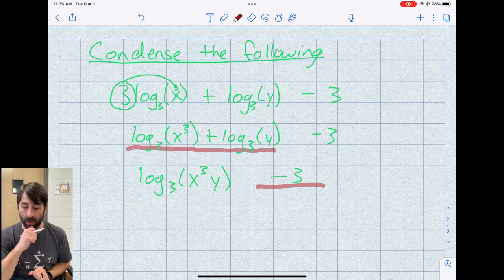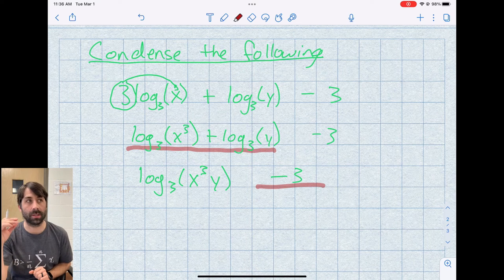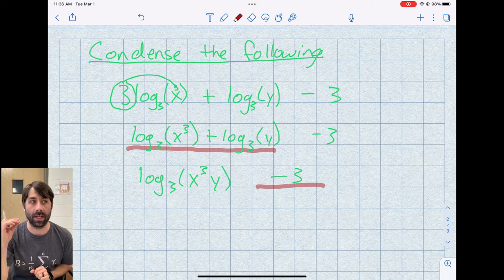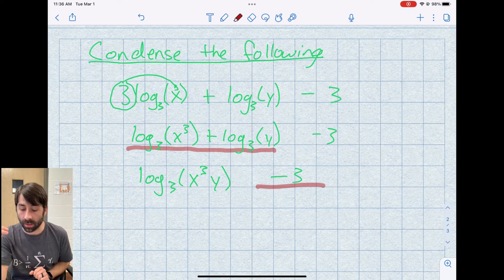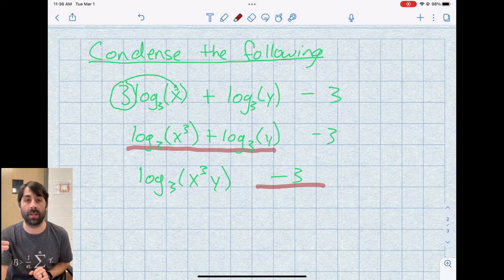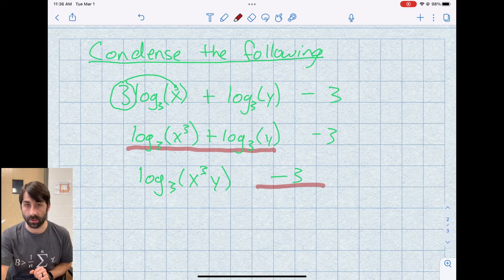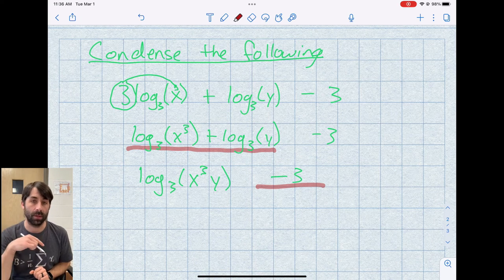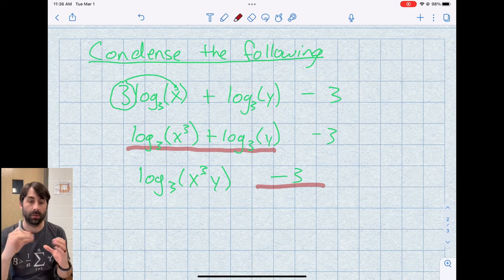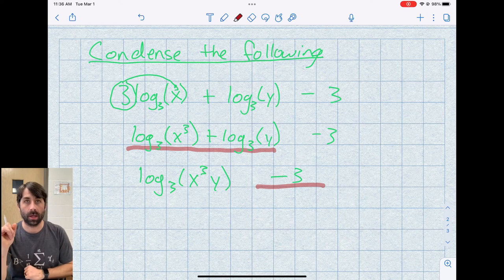And I can think about this actually applying the product rule in a sense. Another way to think about this is thinking about what is the identity log. So the identity log for log base 3 is log base 3 of 3. So in other words, log base 3 of 3 is 1. You raise the base 3 to the power 1 to get the argument 3.